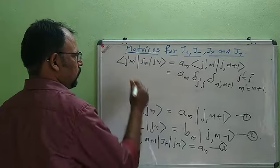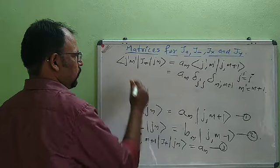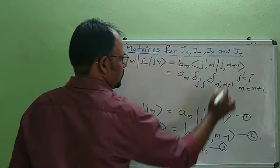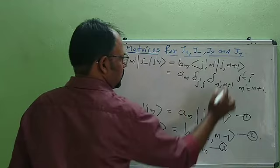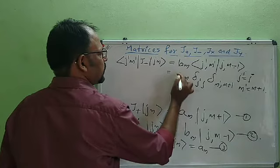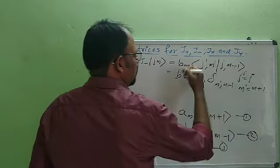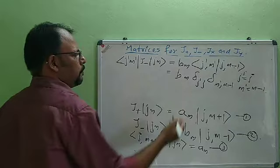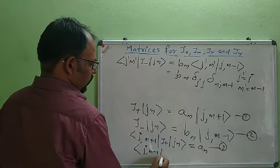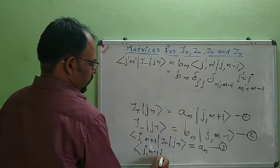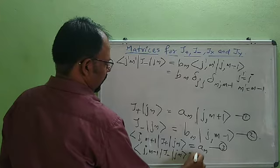Multiplying equation 2 on the left by ⟨J',M'|: ⟨J',M'|J-|J,m⟩ = Bm·δ(J',J)·δ(M',m-1), which is non-vanishing only when M' = m-1. So ⟨J,m-1|J-|J,m⟩ = Bm — this is equation 4.